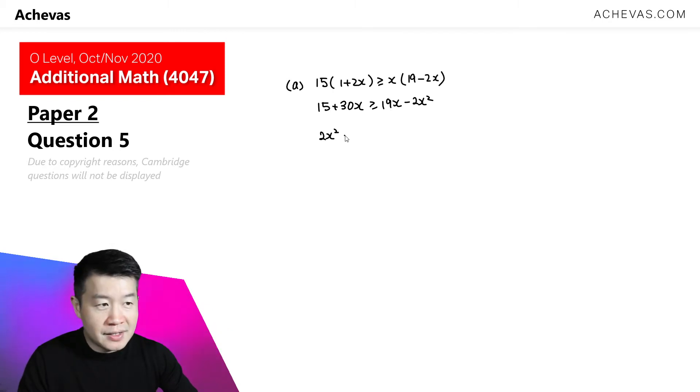30x minus 19x is plus 11x, then plus 15. This is bigger or equal to 0.